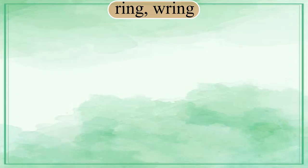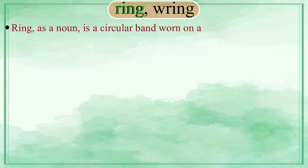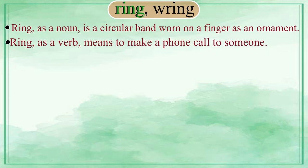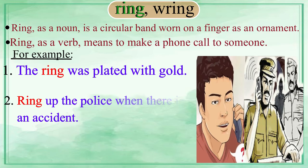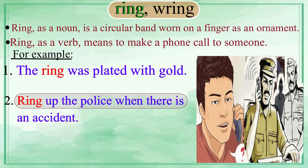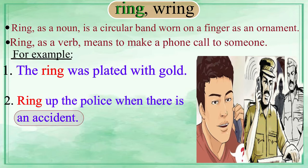Have a look at this pair of homophones: R-I-N-G and W-R-I-N-G — both are pronounced as 'ring.' Ring as a noun is a circular band worn on a finger as an ornament. Ring as a verb means to make a phone call to someone. Ring also refers to the sound a bell makes. For example: 'The ring was plated with gold.' 'Ring up the police when there is an accident.' 'Ring the bell.'